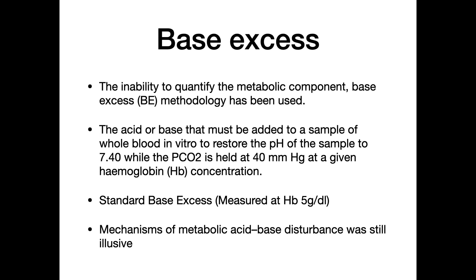There has been a problem in finding the exact metabolic component in acidosis. For respiratory acidosis it is easier because it is based only on carbon dioxide. For the metabolic component, the base excess concept was used — the acid or base that had to be added to a sample of whole blood in vitro to restore the pH to 7.4, while the pCO2 was held at 40 mmHg at a given hemoglobin concentration. The standard base excess is measured at 5 g/dL of hemoglobin.